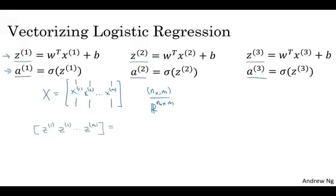It turns out that this can be expressed as w transpose, the capital matrix X, plus, and then this vector b, b, b and so on, b, where this thing, this b, b, b, b, b, b thing is a 1 by m vector, or 1 by m matrix, or that is a m dimensional row vector.